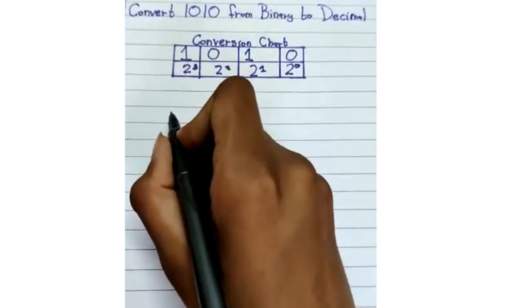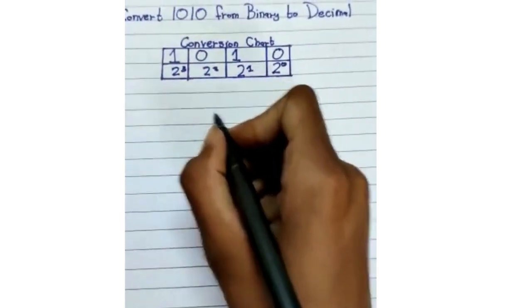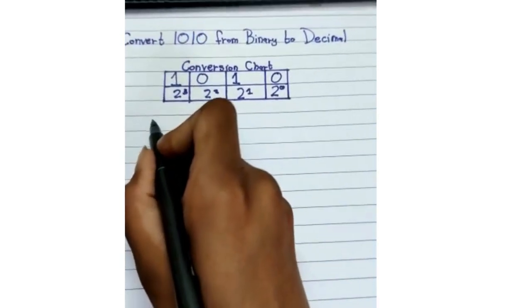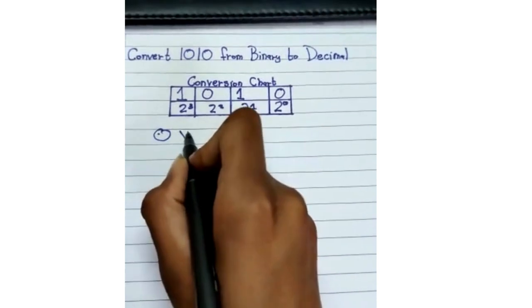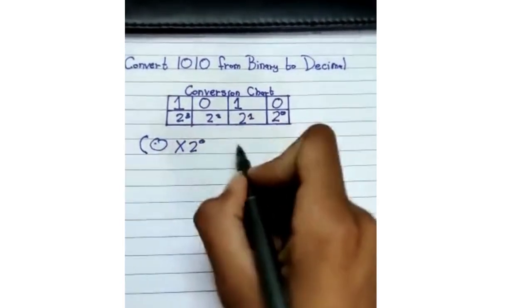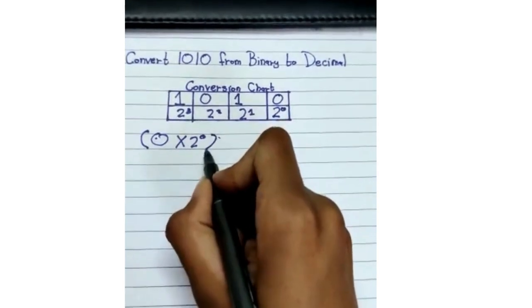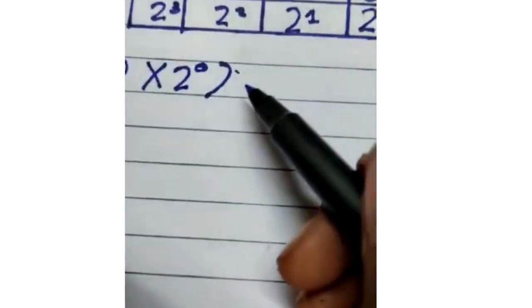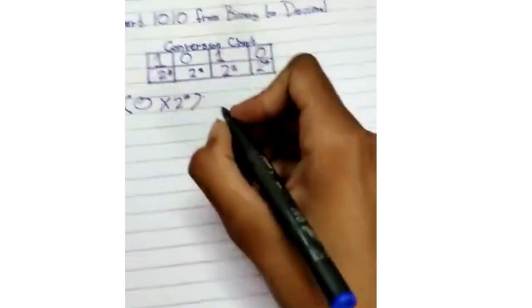Now what we'll be doing here, let's give you a closer look, is that we'll be doing zero times two raised to power of zero. Okay, oops I left a mark over here, sorry about that, then plus.